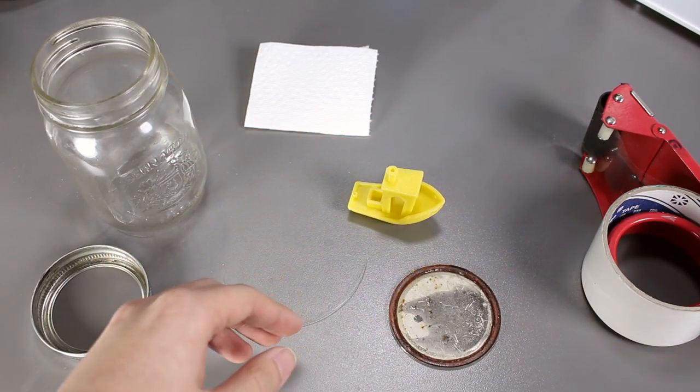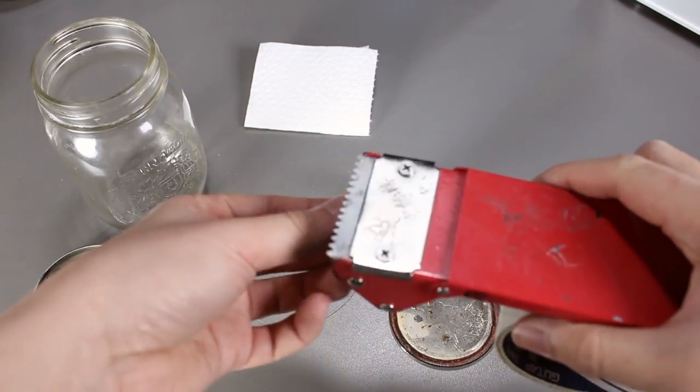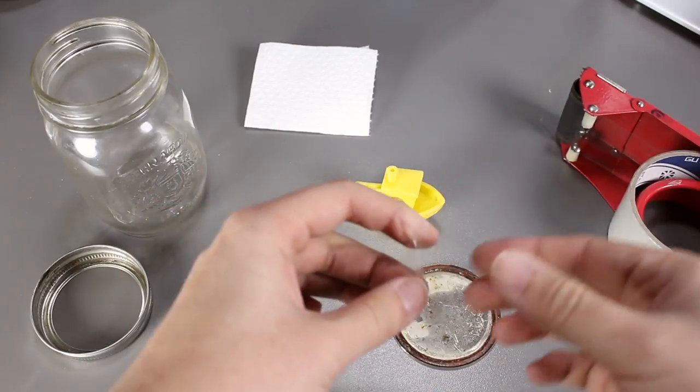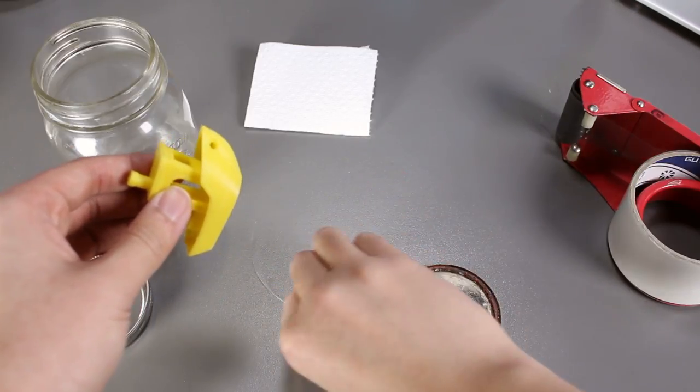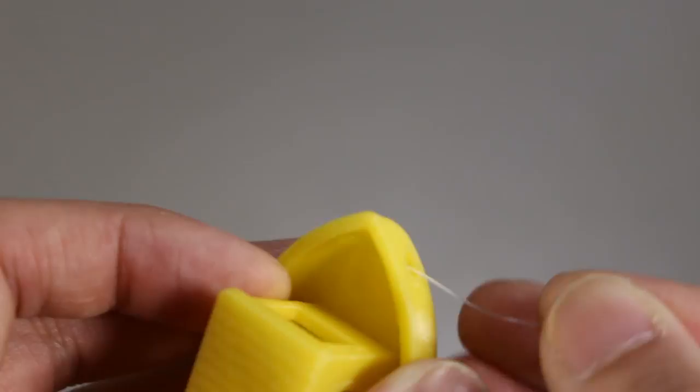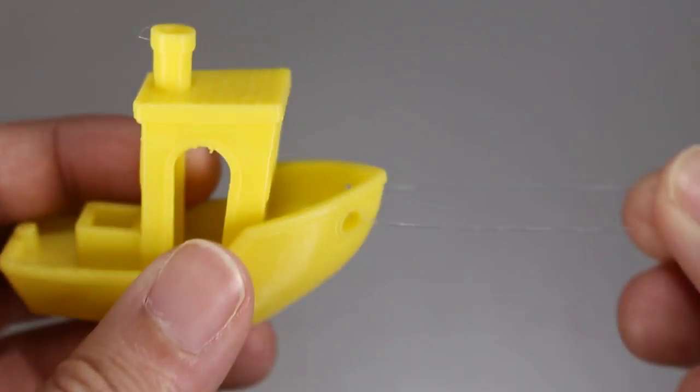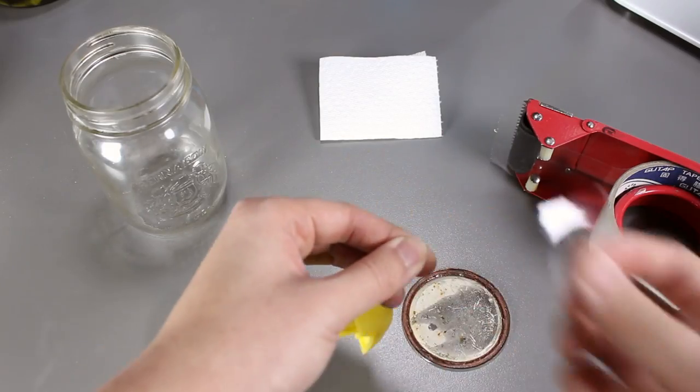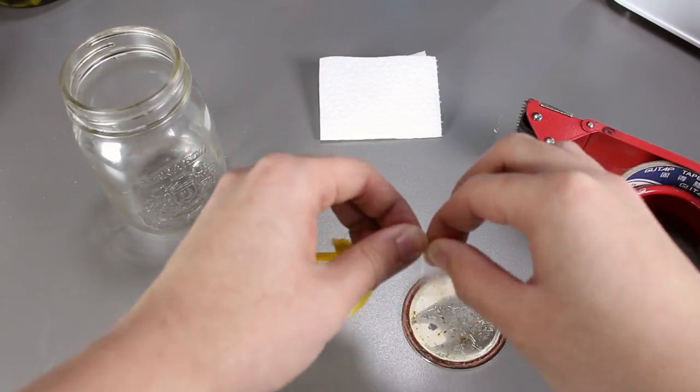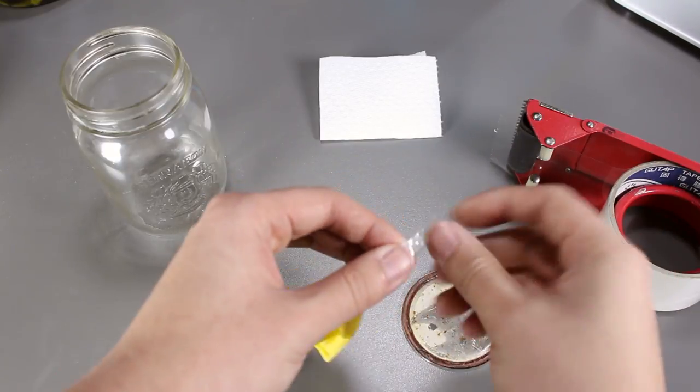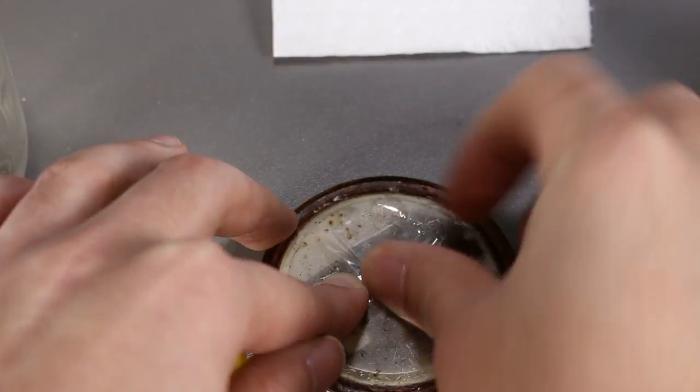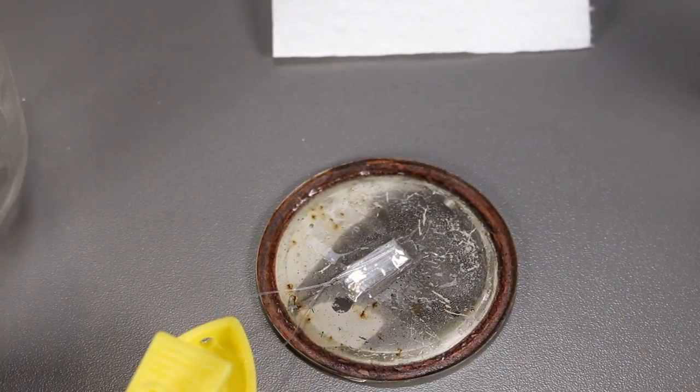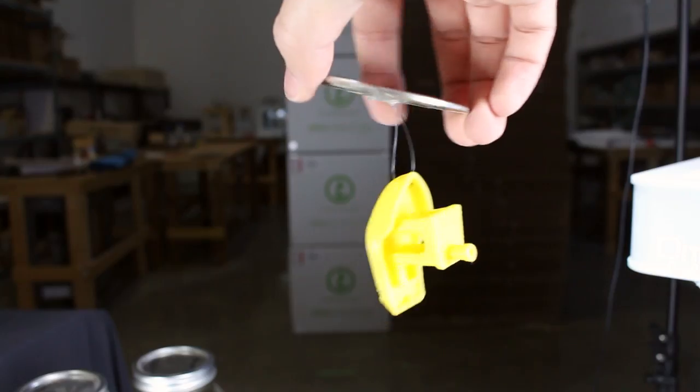Well first we have to dangle the print from the cap. So let's take some tape and start that process. Now we put the string through the print so we can hang it. Tape it to the cap and there we go.